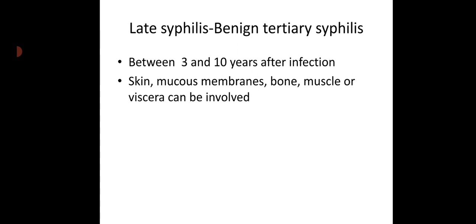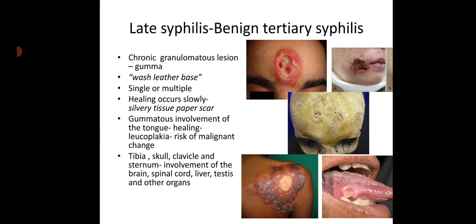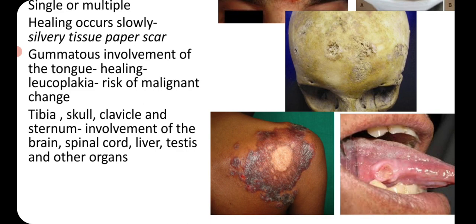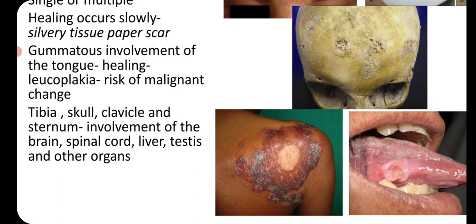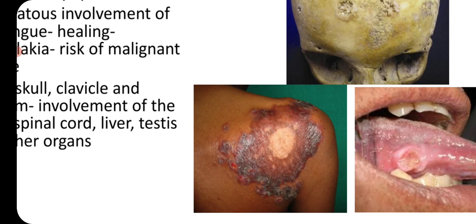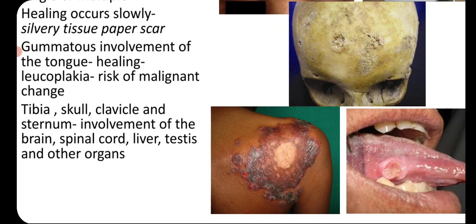Benign tertiary syphilis occurs between 3 and 10 years after infection. Skin, mucous membranes, bone, muscle, or viscera can be involved. The typical lesion is called a gumma — a chronic granulomatous lesion with a wash-leather base. They can be single or multiple and heal with a silvery tissue-paper scar. Gumma involvement of the tongue after healing carries a risk of leukoplakia and thus malignant change.